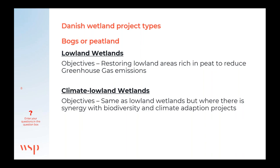Climate lowland wetlands are essentially the same as lowland wetlands, but with more focus on synergy with the EU Birds and Habitats Directives, Natura 2000 areas, biodiversity, protected natural areas, clean drinking water, outdoor activity, organic agriculture, and climate adaptation projects. The goal of lowland wetlands is to reduce carbon dioxide emissions by 70 percent by 2030.